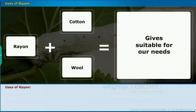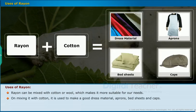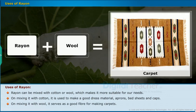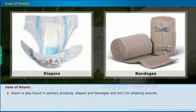Uses of Rayon: Rayon can be mixed with cotton or wool to make it more suitable for our needs. Mixed with cotton, it is used to make dress material, aprons, bedsheets and caps. Mixed with wool, it shows good properties for making carpets. Rayon is also found in sanitary products, diapers, bandages and lint for dressing wounds.